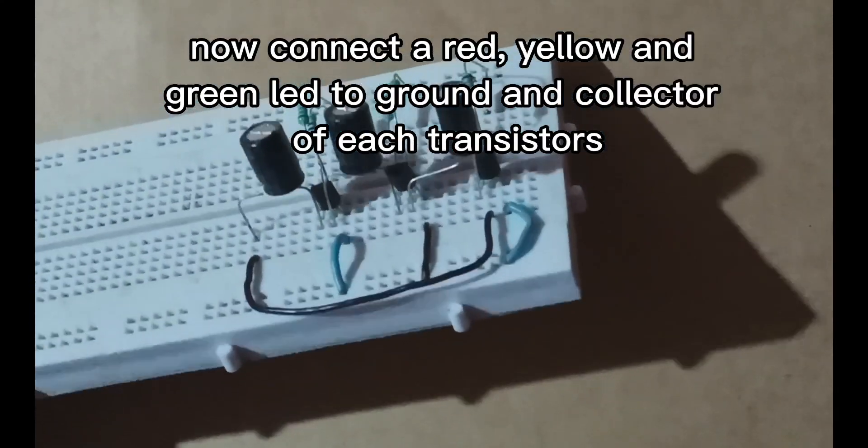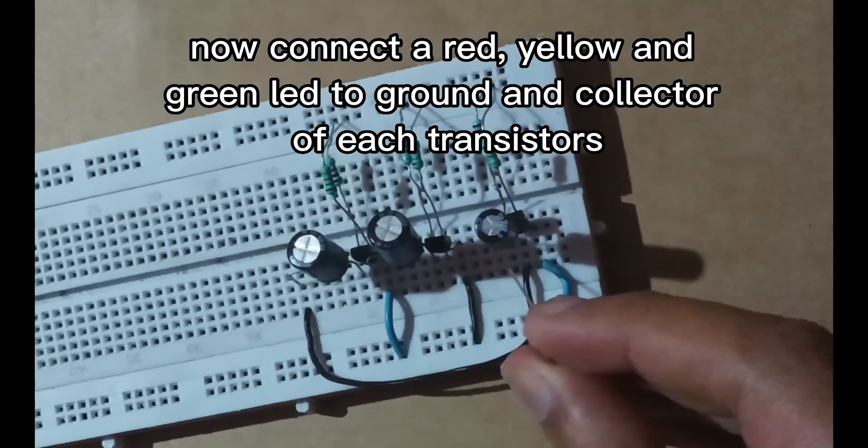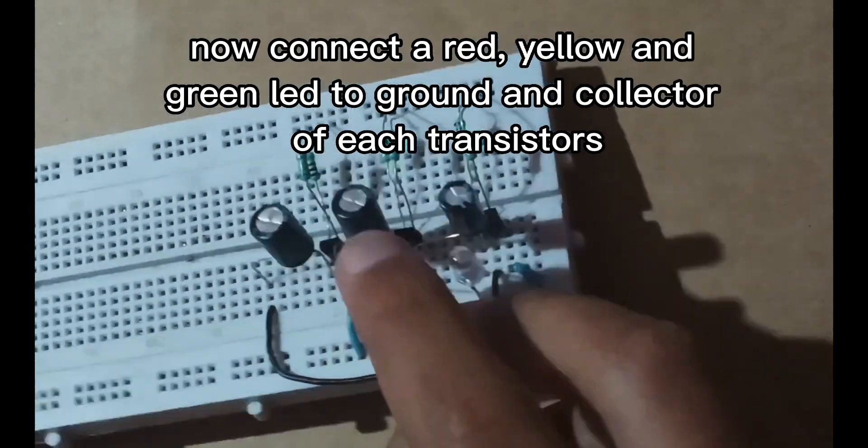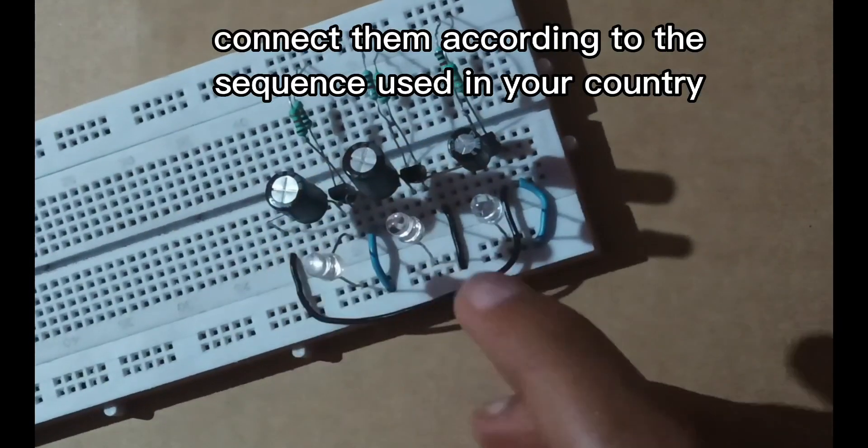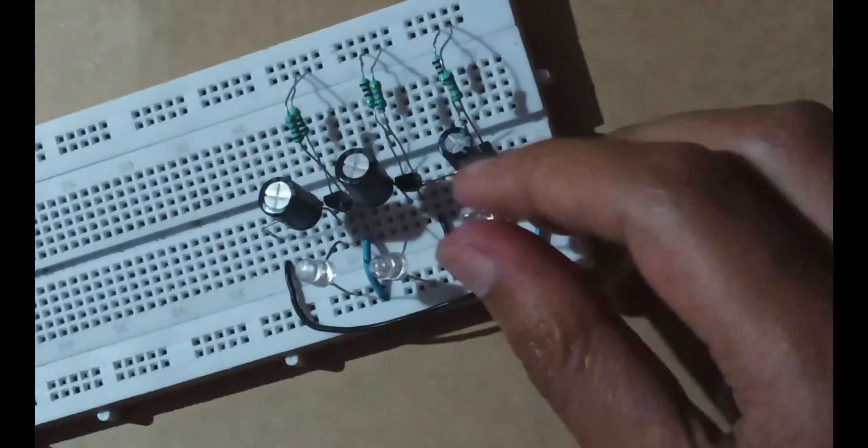Now connect a red, yellow and green LED to ground and collector of each transistor. Connect them according to the sequence used in your country.